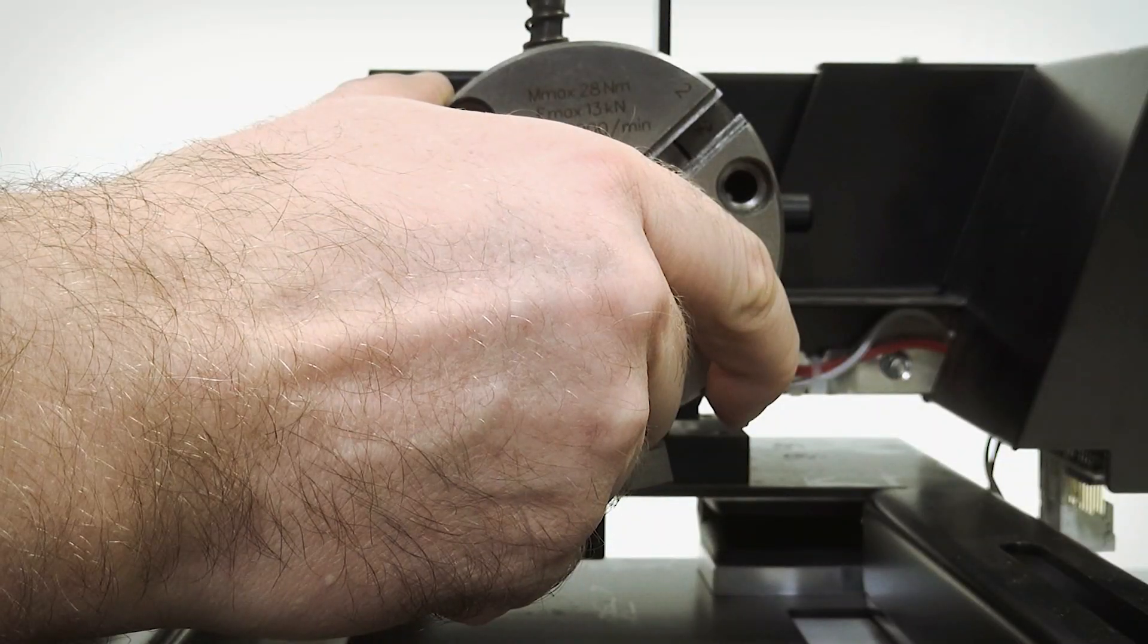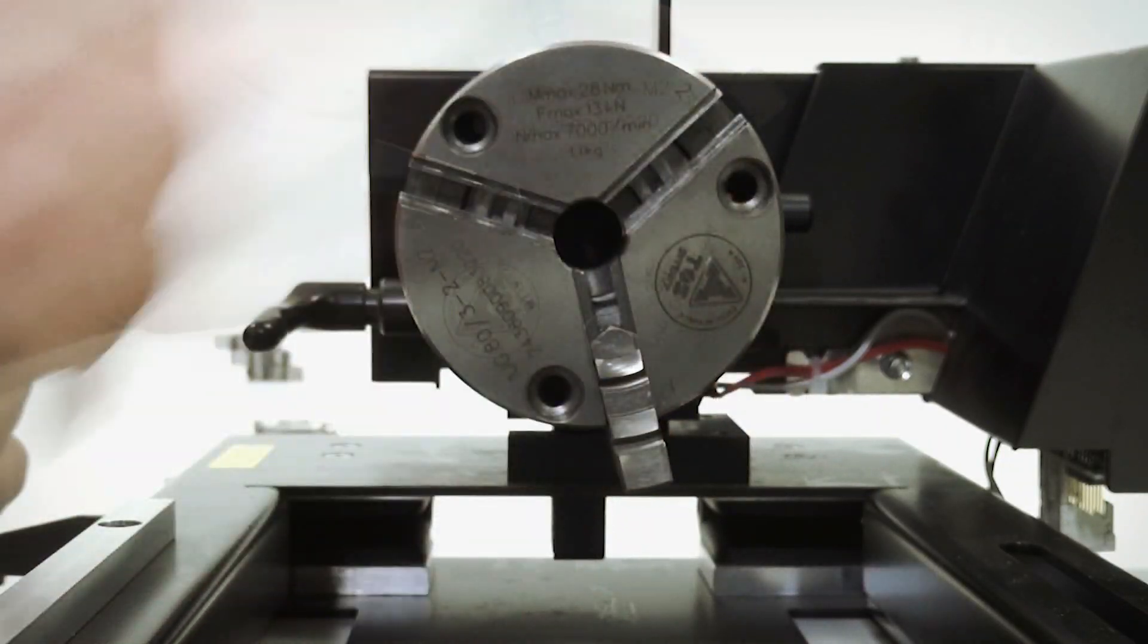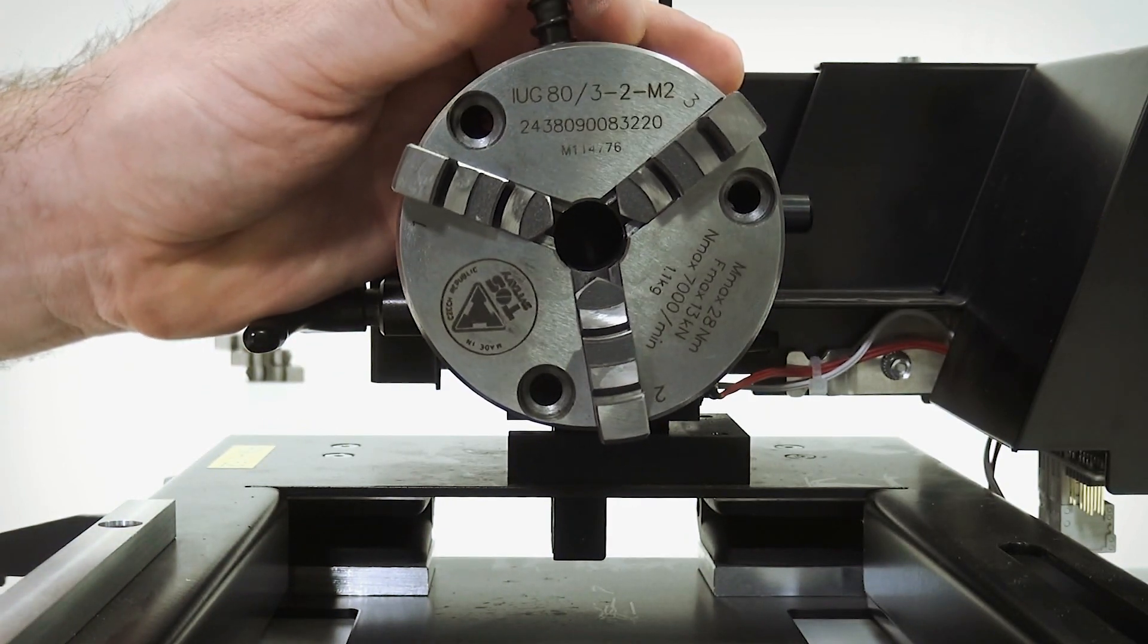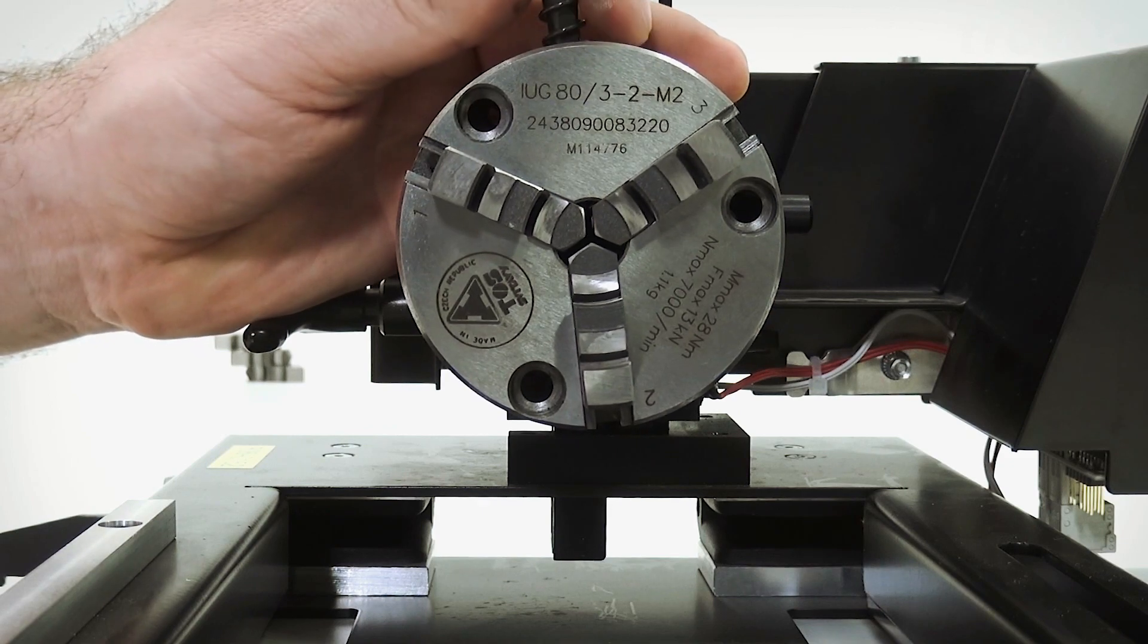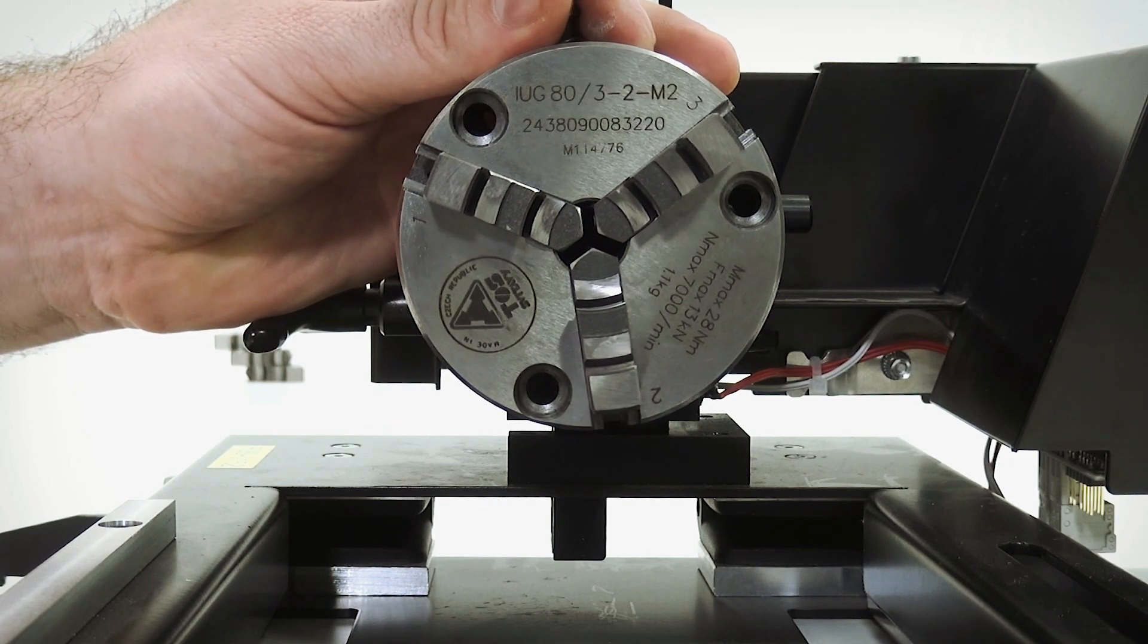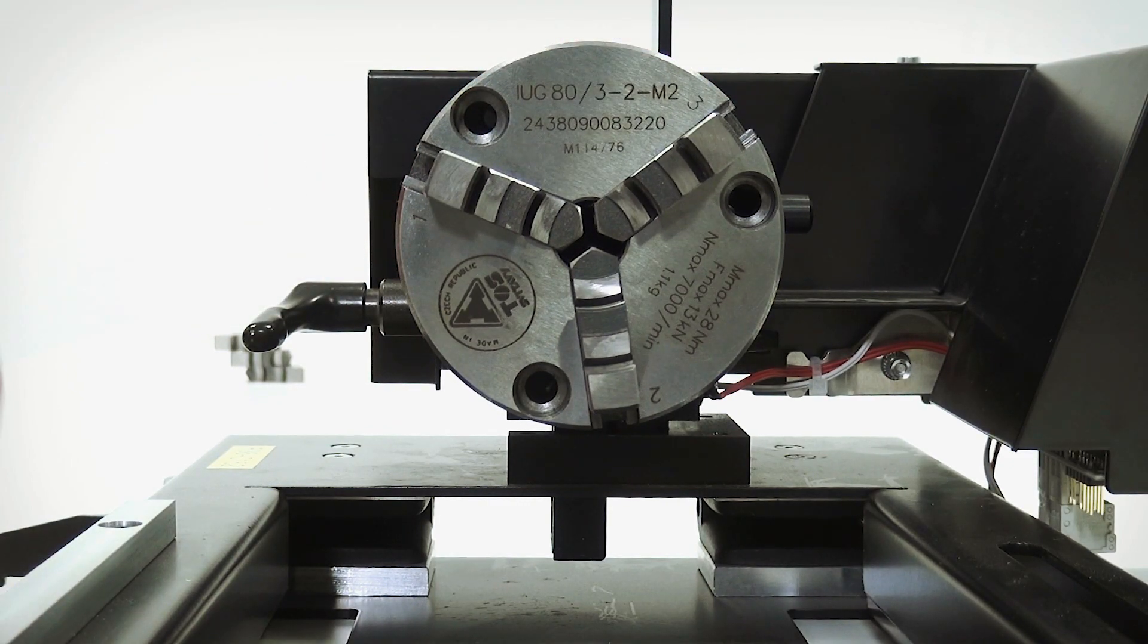When all three jaws have been placed onto the chuck, you can use the tool and see that all jaws are moving inwards. If one or more jaws are not moving inwards, you'll need to repeat the process starting at jaw 1.